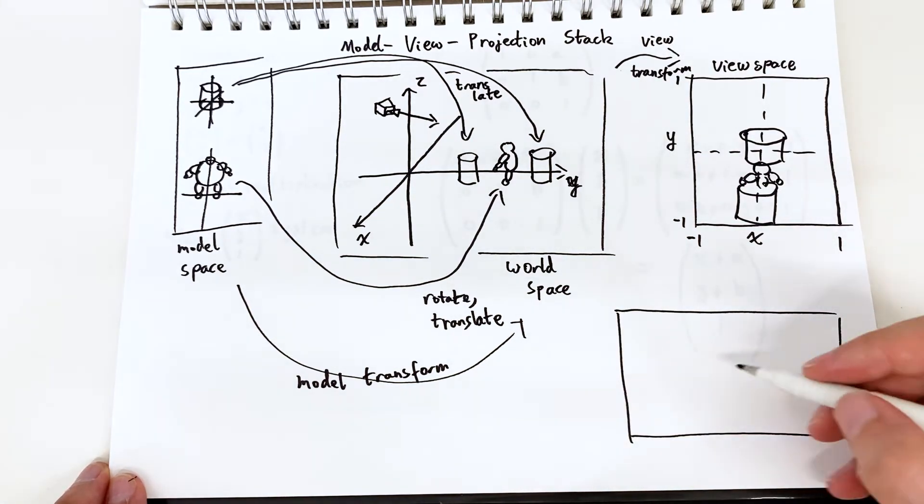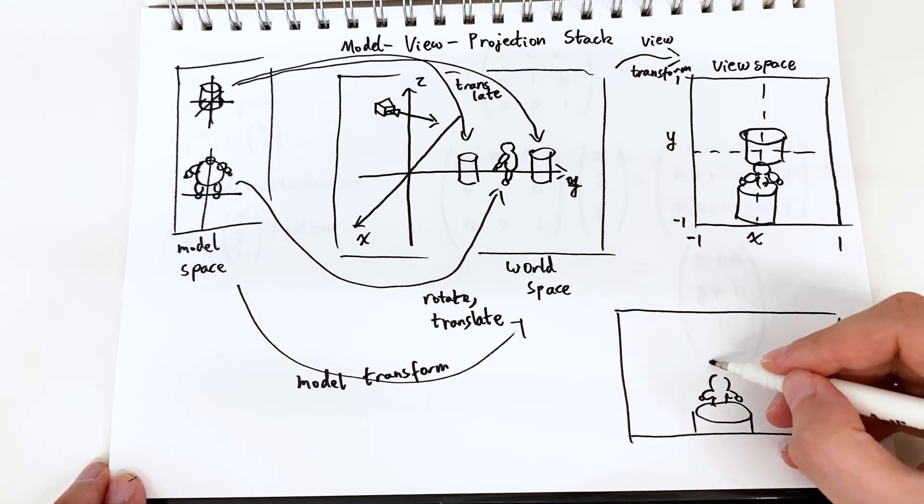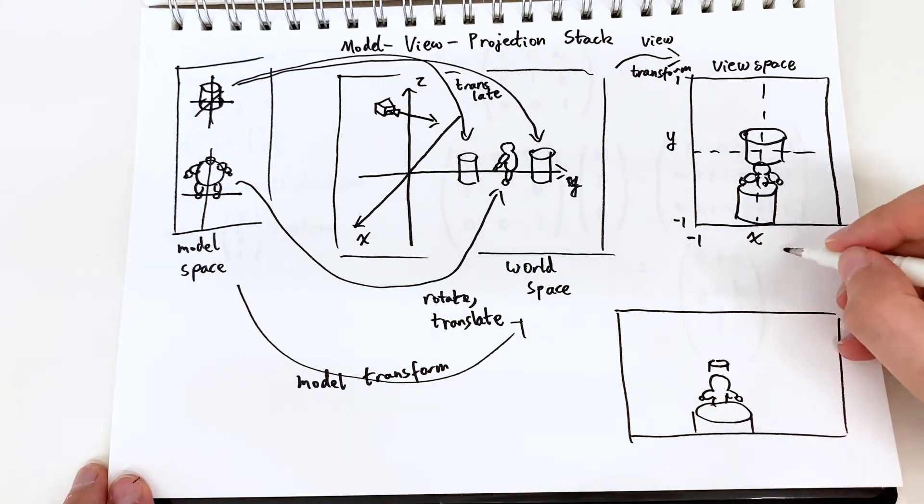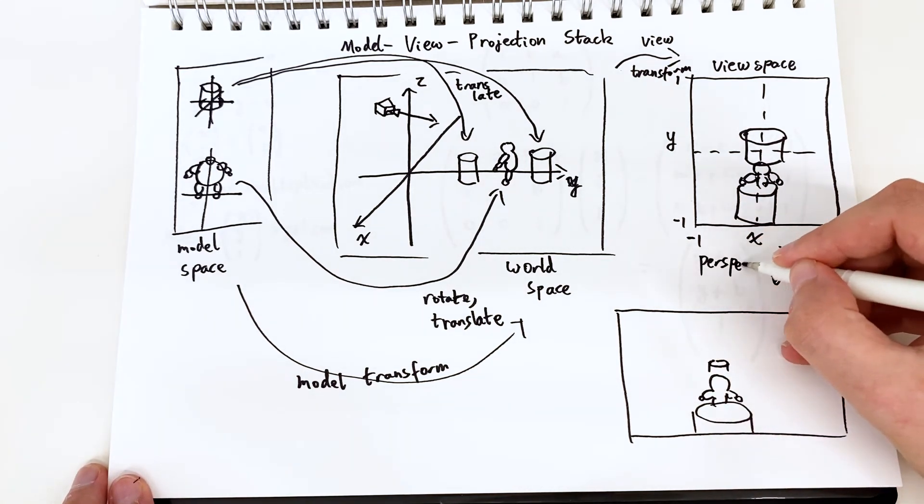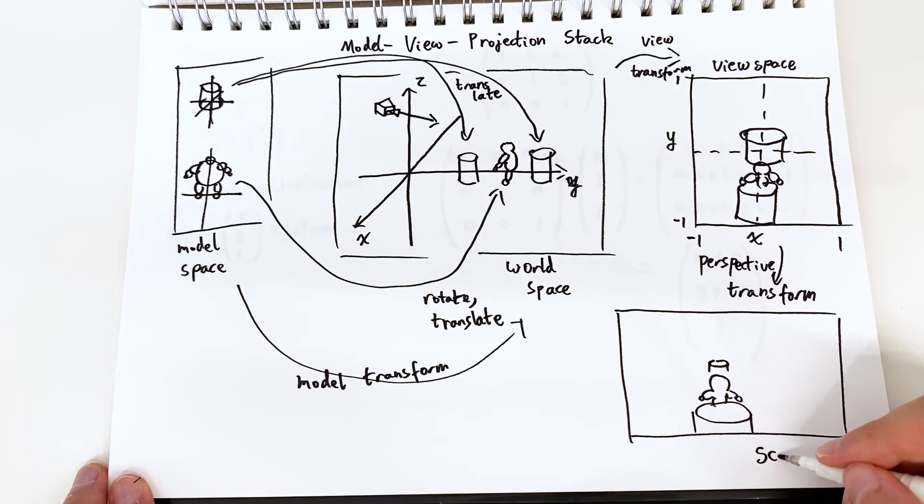Okay then we need to hit this with a perspective transform. This will take the view space and transform it into screen space. Also if we look at view space the cylinders are both the same size even though they are different depth away from the camera. So we have a perspective transform which transforms things appropriately and gives us a 3D view.